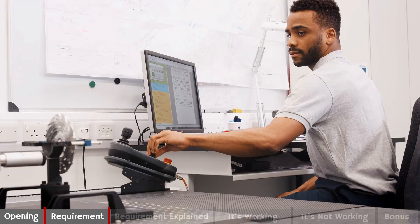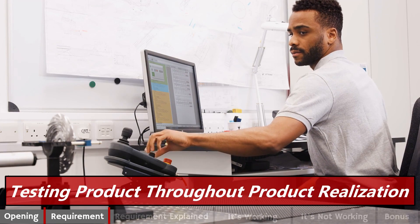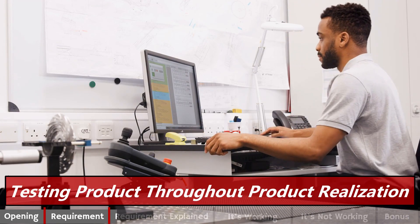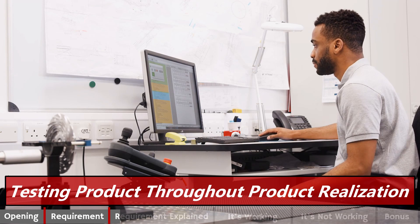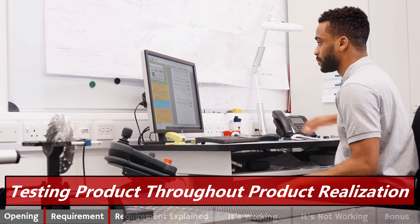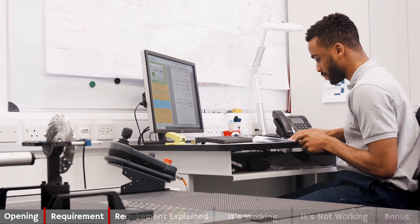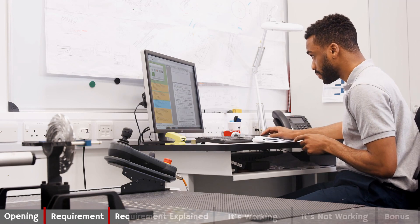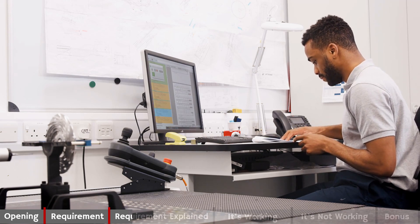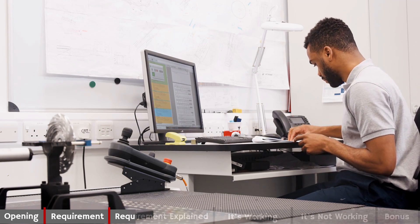Acceptance Activities in five words: Testing product throughout product realization. In this requirement, we really outline everything that's required for testing during the product realization process. This requirement tackles incoming inspection, in-process inspection, and final release inspection. We have to have procedures outlined for each one of those different inspection activities.